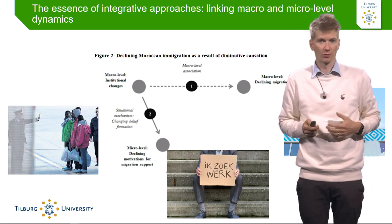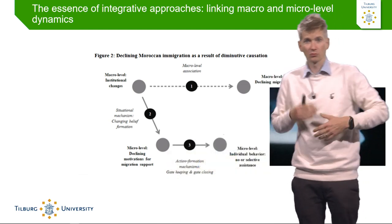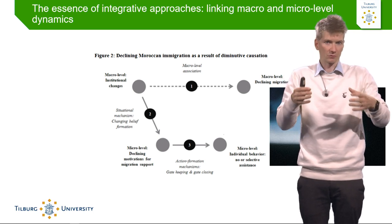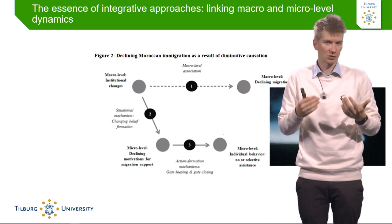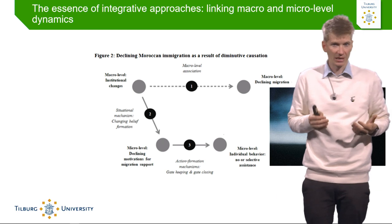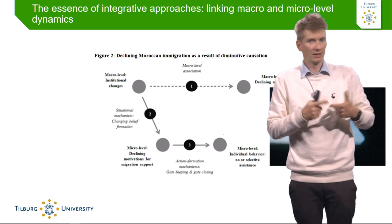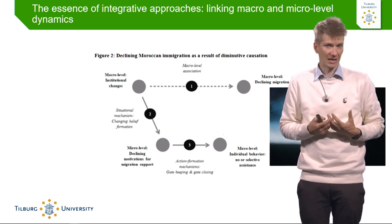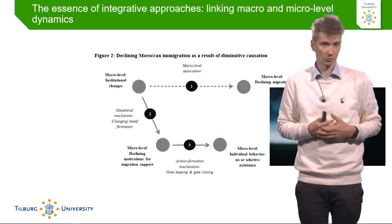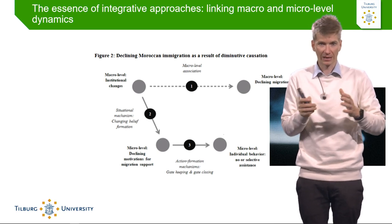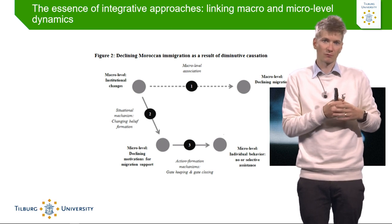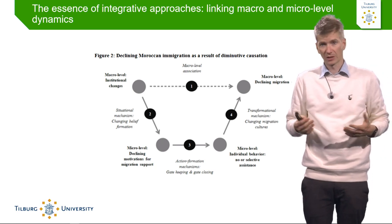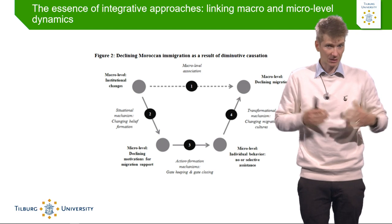There were declining motivations for supporting new migrants, which led to the action formation mechanism. Instead of helping migrants who would come, the gates were effectively closed by existing migrants. They sent messages back to people in Morocco indicating that the situation in the Netherlands was not as good as before — it was difficult to find a job and difficult to get into the country. They also communicated that new arrivals were unwanted because that would further increase anti-migrant sentiment among parts of the general population.